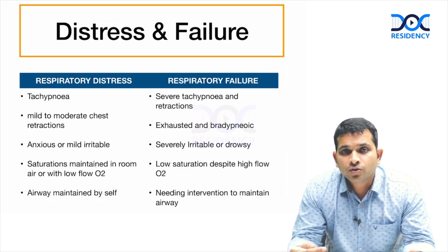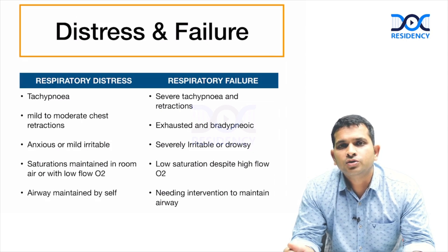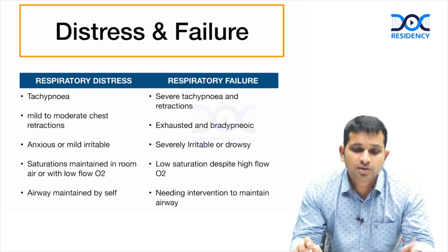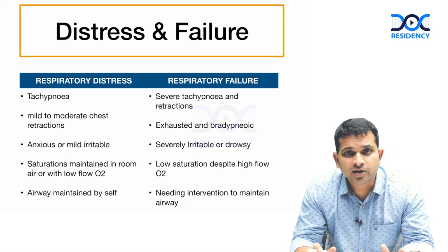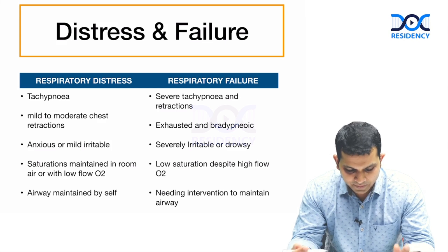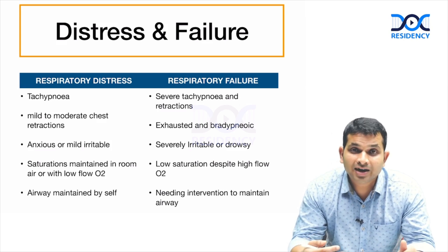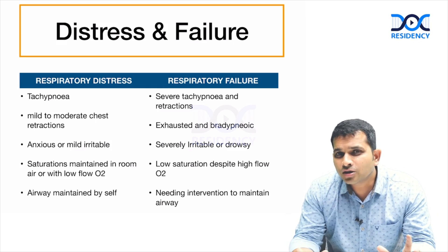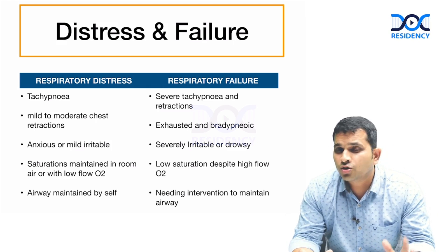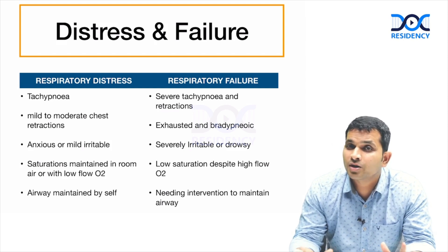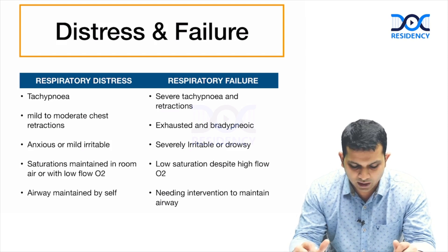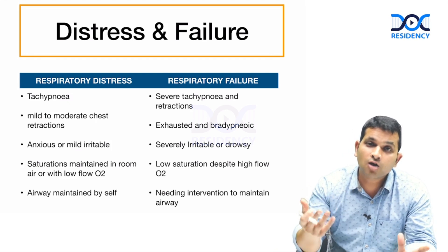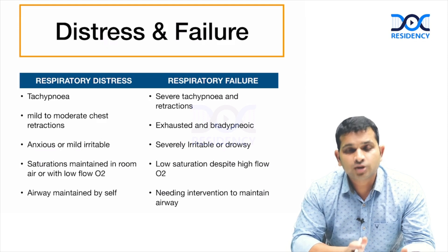As I discussed, there is respiratory distress and respiratory failure. There are other definitions used in literature like 'impending respiratory failure,' but let me tell you — there are only two things: either it is respiratory distress or respiratory failure. In respiratory distress clinically, you have tachypnea, mild to moderate chest retractions — subcostal and intercostal retractions. The child will be irritable, and saturations will be affected; they are not able to maintain saturation above 92% in room air. They may sometimes not be able to maintain their airway by themselves — for example in croup, where there is swelling of the upper airway.